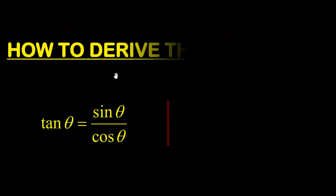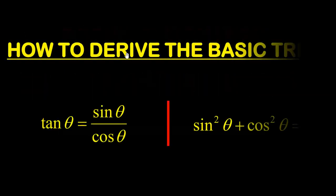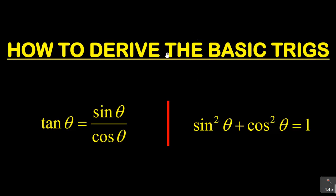Hello, our most valued student. My name is Confident. Welcome to our session. In this particular session, I wanted to bring to you the derivation of the basic trig identities. The first one is how do you derive that tan θ is equal to sin θ over cos θ? And the second one is how do you derive that sin²θ plus cos²θ is equal to 1?